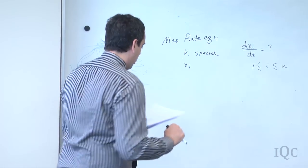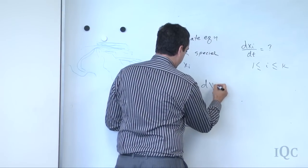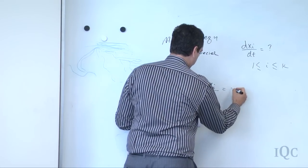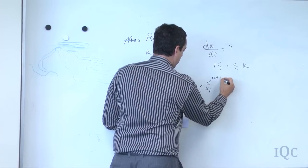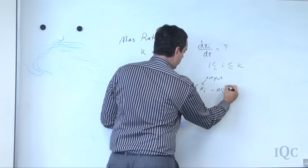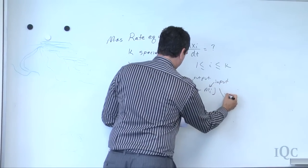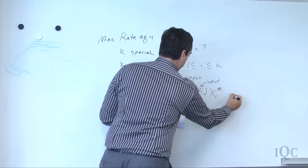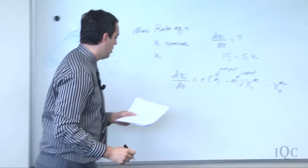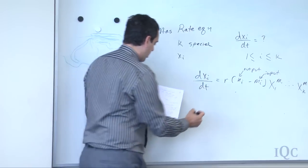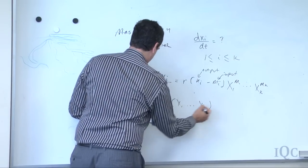For each transition we end up with a term: dx_i/dt equals the rate constant times (n_i minus m_i), where n_i is the output and m_i is the input, times the product of the reactants going into the reaction. Using index-free notation, we define all our vectors as x_1 up to x_k, with an input vector m and an output vector n.